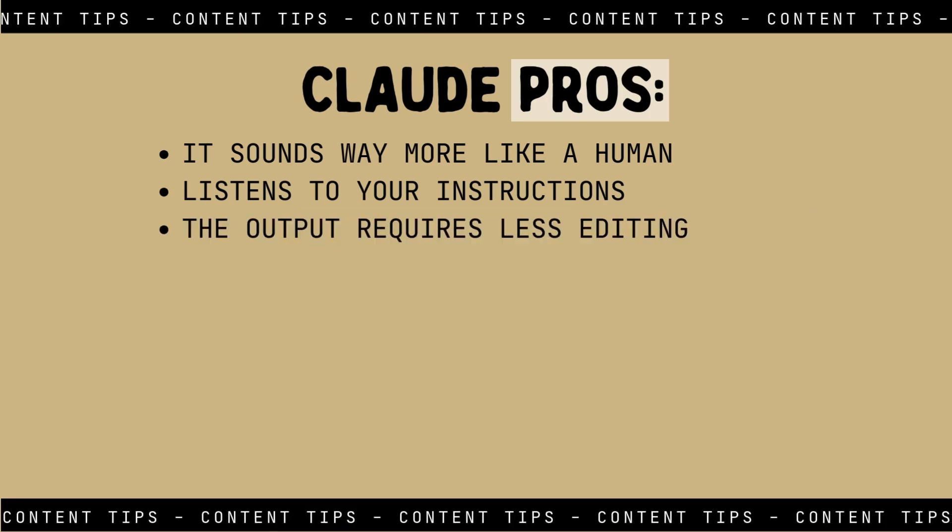Whereas with Claude, if I tell it something, it listens. It doesn't include those hashtags, it doesn't include emojis. And sometimes at the end it even reaffirms: 'Here is what I'm going to give you without hashtags and without emojis.' Also with Claude, I've noticed that the output requires less editing. Yes, I am still editing everything Claude gives me, but it picks up on my voice, my mannerisms in copy. When I give it instructions, it listens and performs better so I don't have to spend as much time editing.